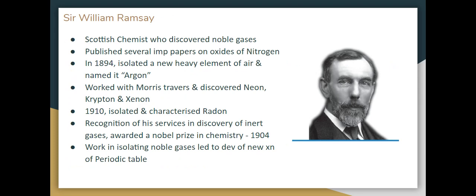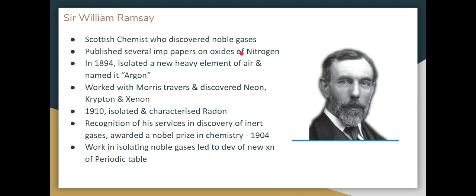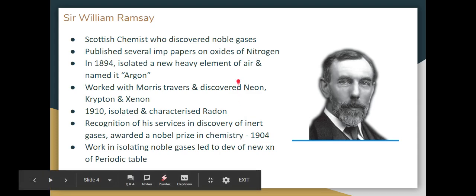First, we will talk about Sir William Ramsey, a Scottish chemist. He discovered the noble gases. Nitrogen and oxides and other papers were published. In the atmosphere, there is a new heavy element, argon, that was isolated in 1894. Morris Travers worked with him to discover Neon, Krypton, Xenon. In 1910, Radon was isolated and characterized. This is the inert gas discovery series. He was recognized with a Nobel Prize in 1904.